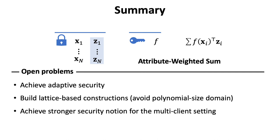Finally, we leave several open problems. First, our scheme only achieves selective security — it is generally desirable to have an adaptively secure scheme. By using the bilinear group, we have to restrict the domain size to be polynomial so that we can use a brute force discrete log algorithm to recover the final attribute weighted sum. It would be interesting to have a lattice-based scheme to get rid of this restriction. Finally, our multi-client scheme requires all parties to negotiate fresh correlated randomness for each encryption. It would make the scheme more practical to allow them to reuse the randomness in the future. Thank you for your attention.